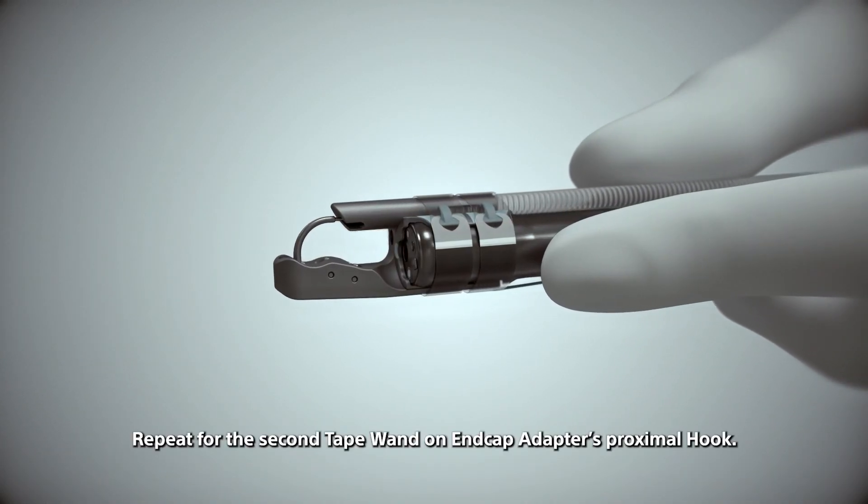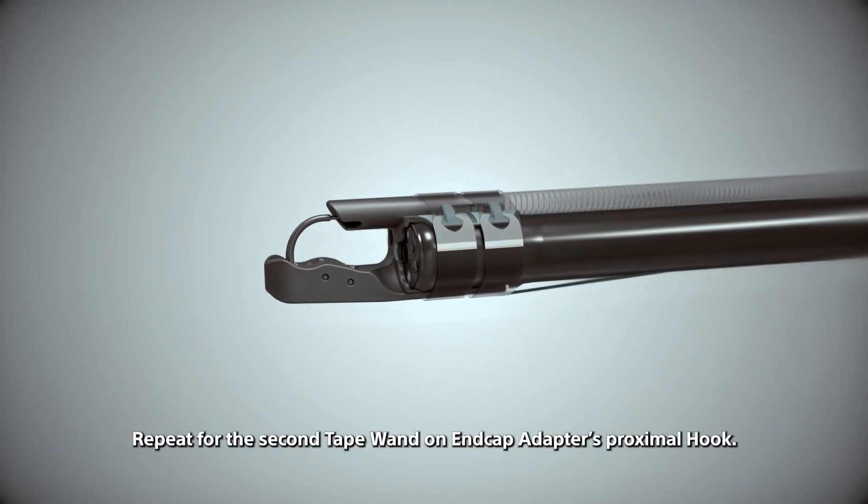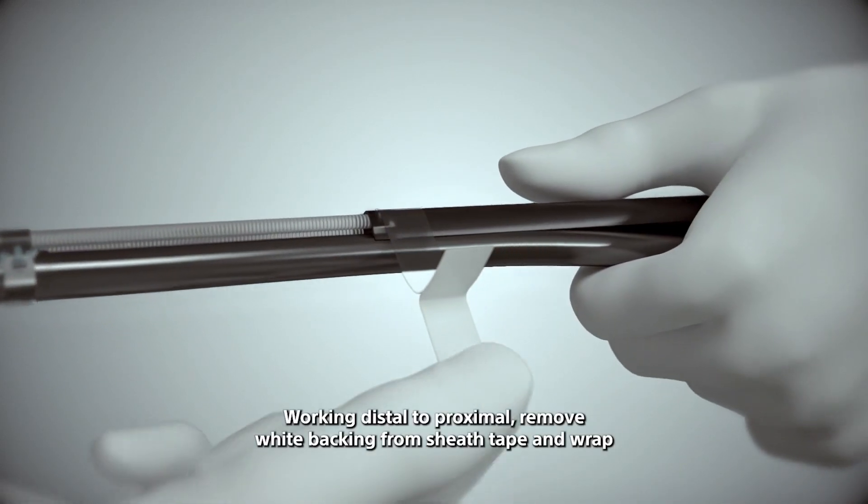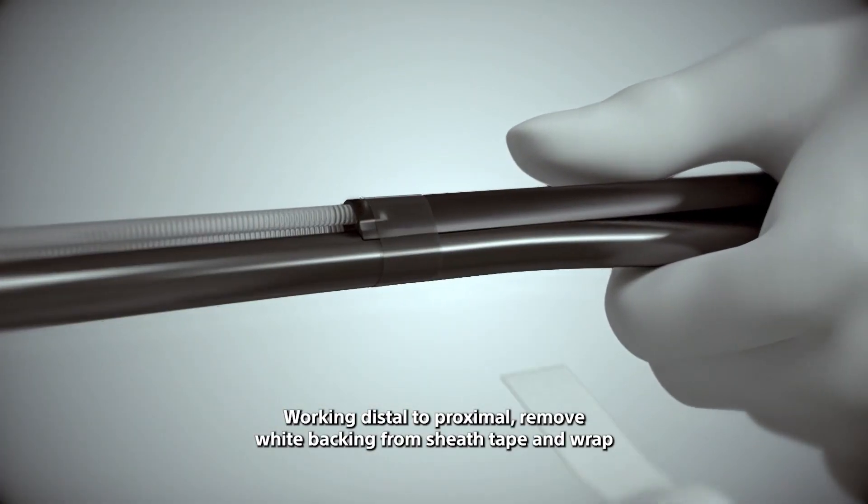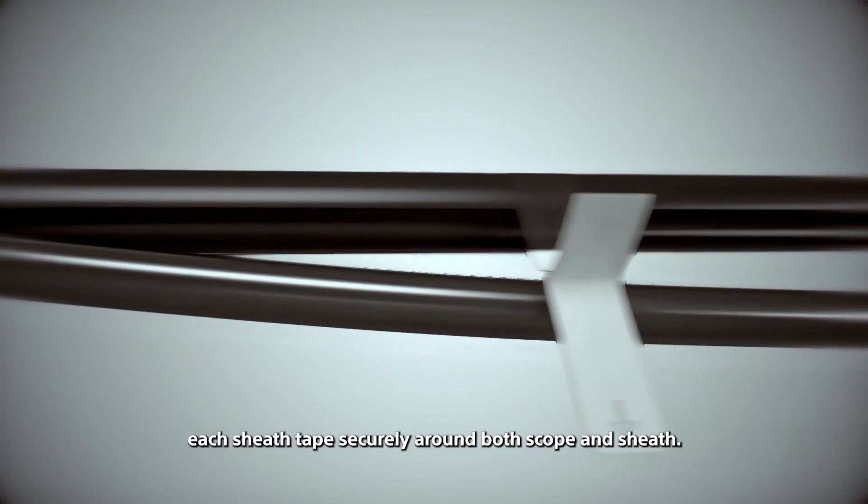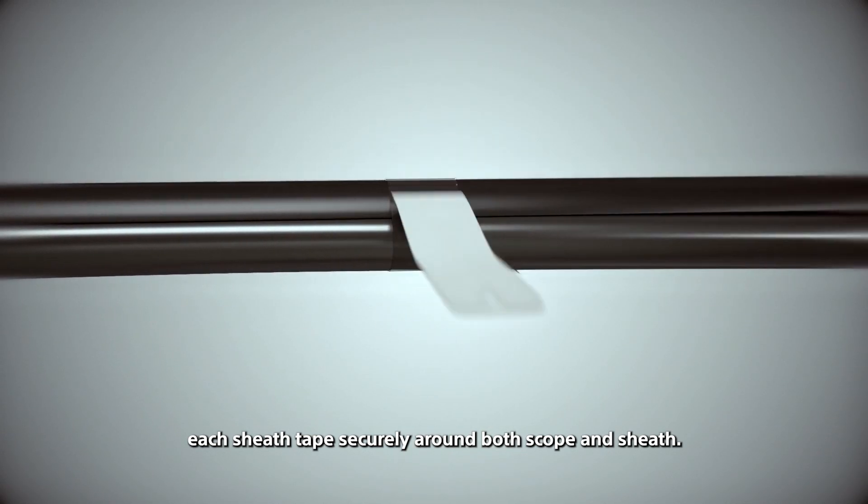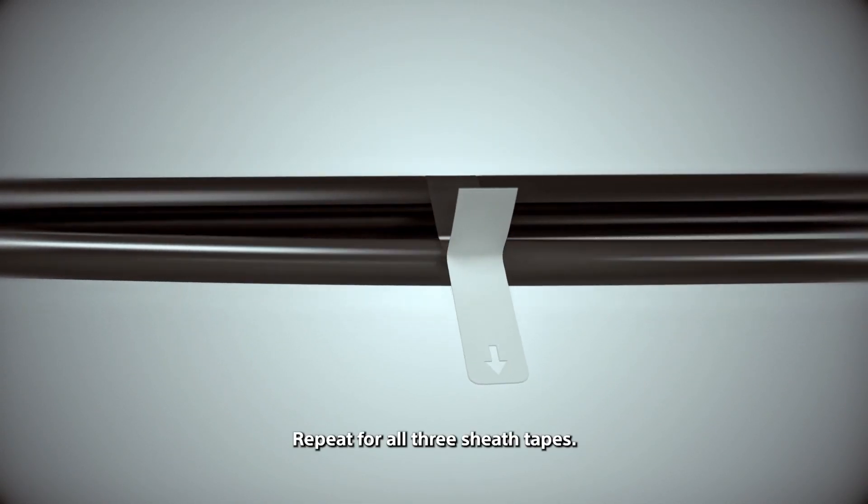Repeat for the second tape wand on end cap adapters proximal hook. Working distal to proximal, remove white backing from sheath tape and wrap each sheath tape securely around both scope and sheath. Repeat for all three sheath tapes.